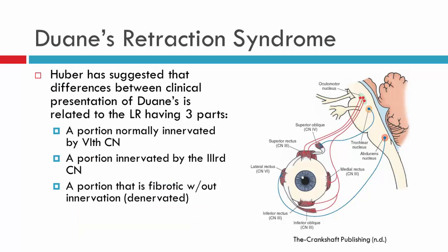In Duane's Syndrome, patients will have different clinical characteristics. Some will have limitation of abduction more so than adduction, and others will have more limitation of adduction than abduction. Huber suggested that there may be components of the lateral rectus — dividing it into three parts: one part innervated by the sixth nerve, one part innervated by the third, and another part innervated by no nerve (i.e., it has become fibrotic). If the portion normally innervated by the sixth nerve is large, you're likely to see good abduction; whereas a patient with a small proportion innervated by the sixth nerve may show significant reduction in abduction.